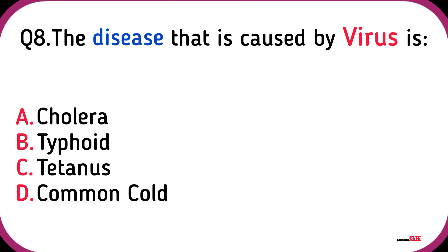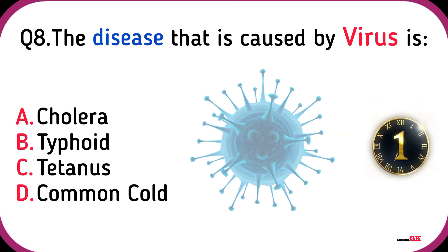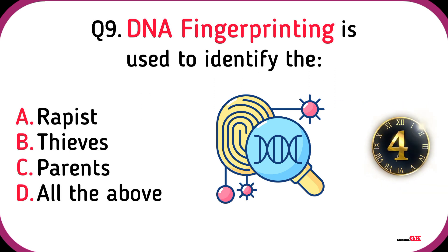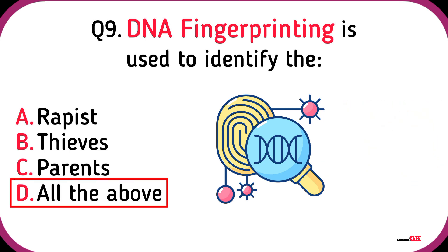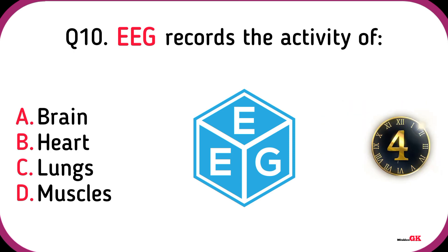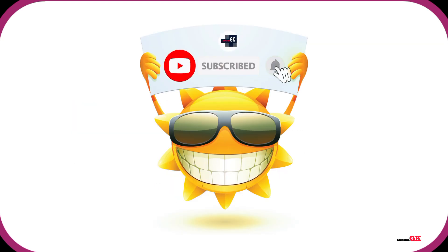Blood groups were discovered by Landsteiner. The disease that is caused by a virus is common cold. DNA fingerprinting is used to identify. EEG records the activity of the brain.